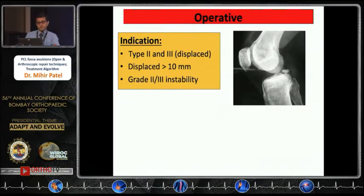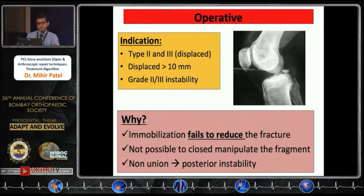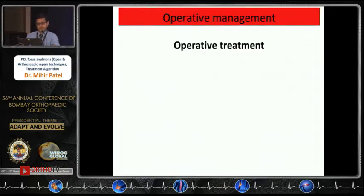Operative indication is Type 2 and Type 3 fractures where displacement is more than 10 millimeters, and these patients usually have grade 2 or grade 3 instability. These need fixation because immobilization fails to reduce the fragment, closed manipulation is not possible, and these cases lead to non-union and posterior instability.